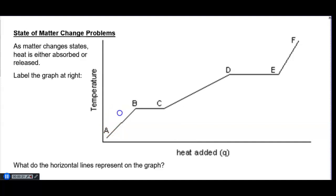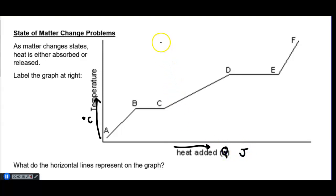Down here at the lowest temperature, you will see a diagonal line. On the y-axis we have temperature increasing in degrees Celsius, and on the x-axis we have the heat being added — that is the symbol Q with units of joules. We'll pretend this graph is of water. Starting down here at the lowest temperature with the least amount of heat being added, that state of matter is a solid.